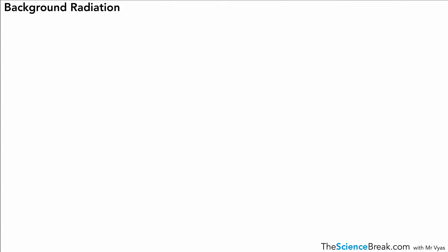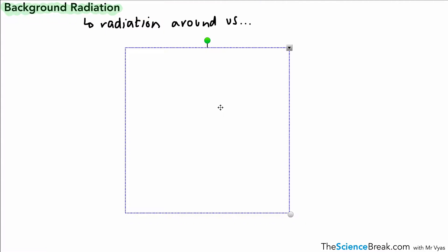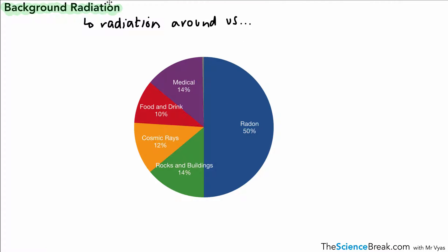Hello and welcome. Today we're going to take a look at background radiation — what we mean by background radiation and a couple of sources of where it comes from. Background radiation is radiation that's all around us all the time, and it comes from a various number of places. Let's take a look at what they might be.